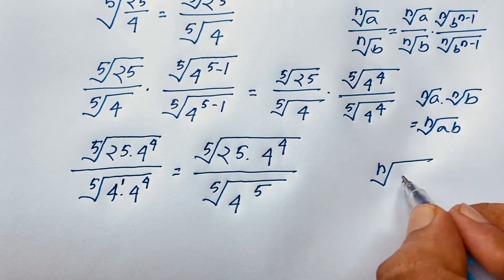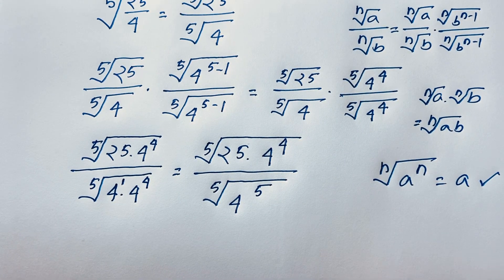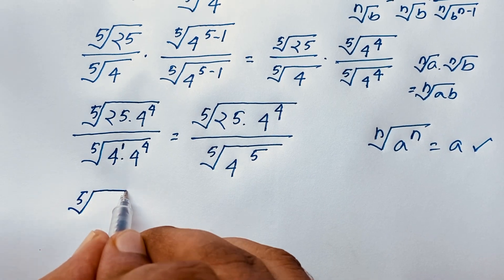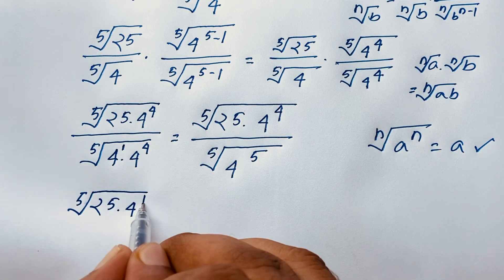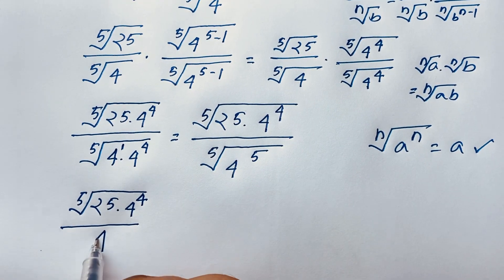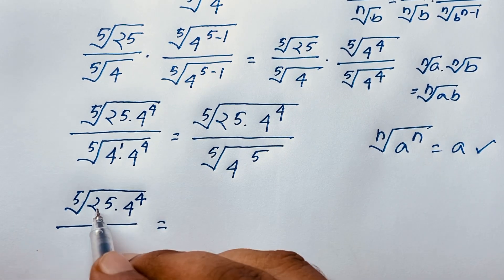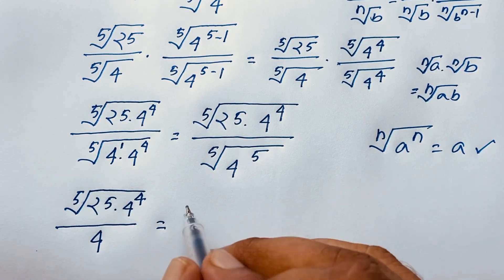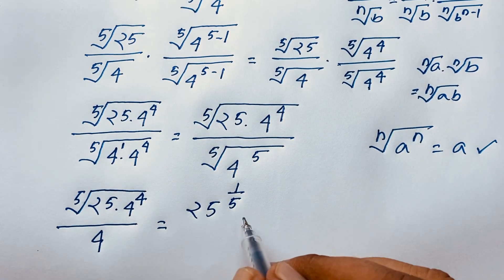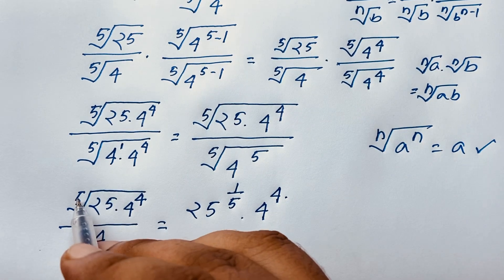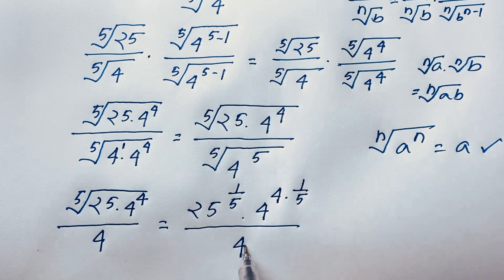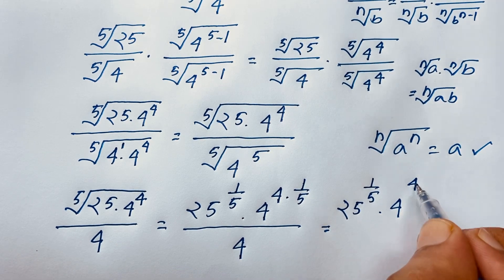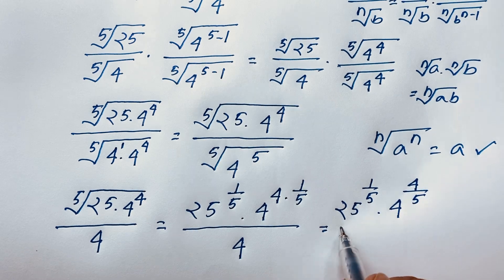We know that n-th root of a to the power n equals a. So applying this formula, the denominator becomes simply 4. The expression is now 5th root of 25 times 4 to the power 4, over 4. Evaluating: this gives 25 to the power 1 over 5, times 4 to the power 4 times 1 over 5 — that is 4 over 5 — over 4.